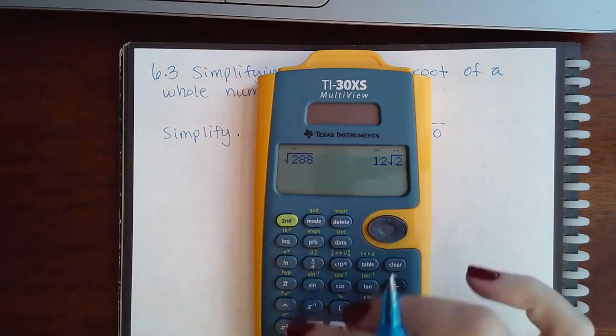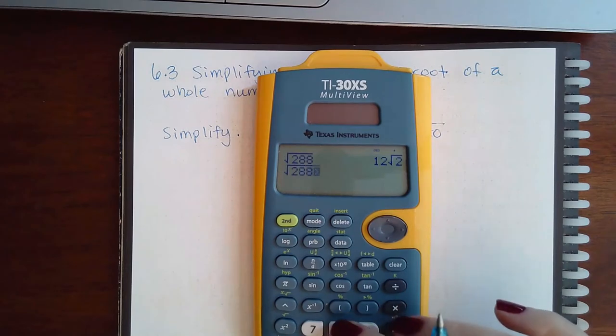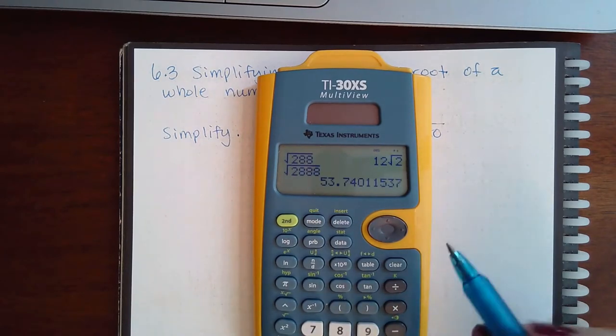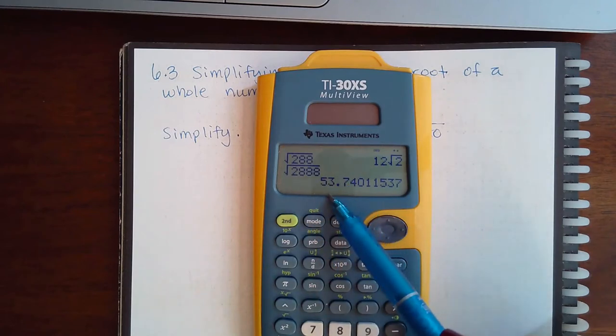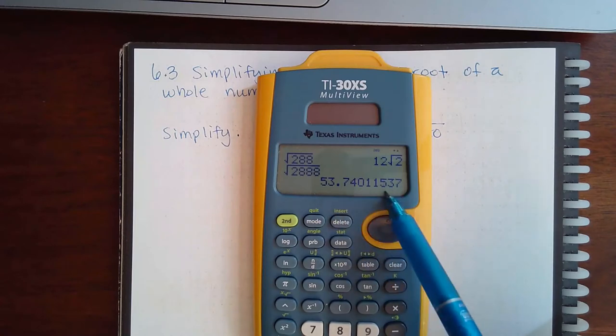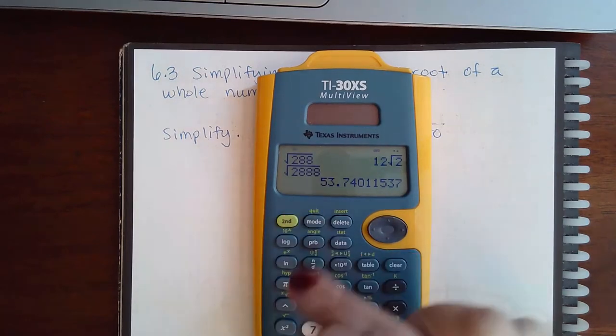However, they will not simplify very large numbers. After you get over a thousand, the calculator will only give you the decimal version of the response and not the exact value of the response.